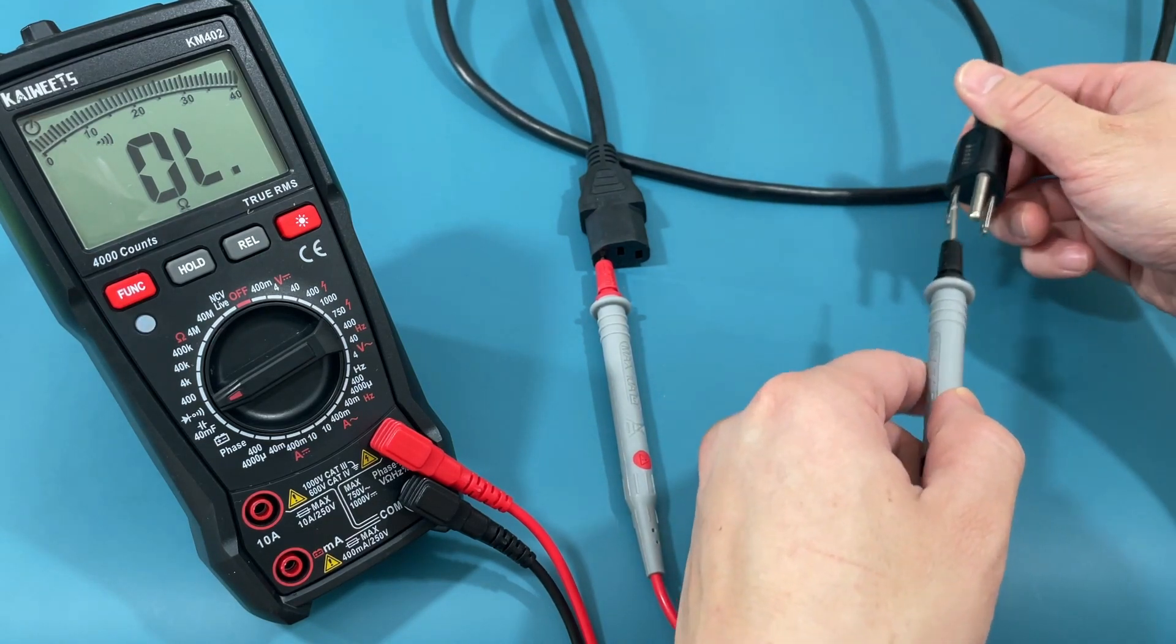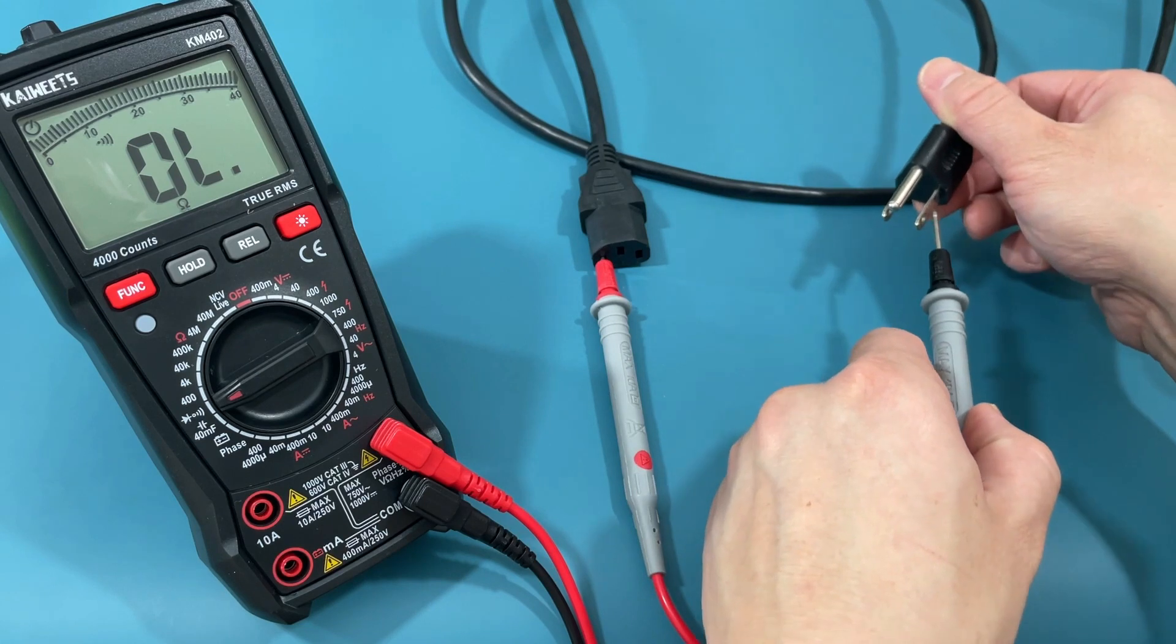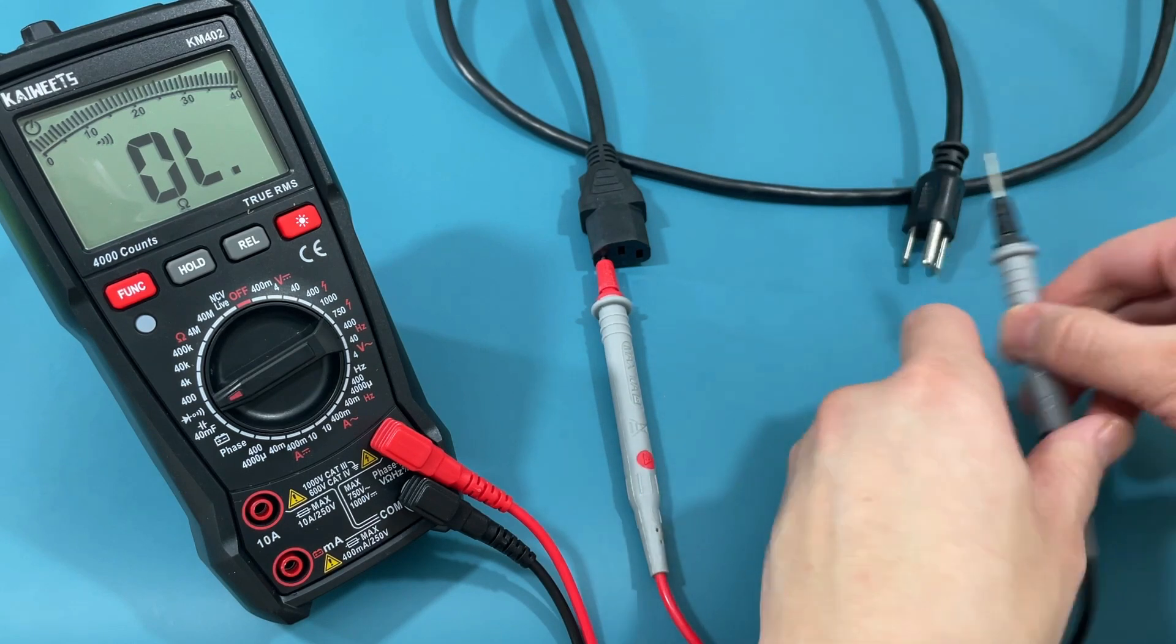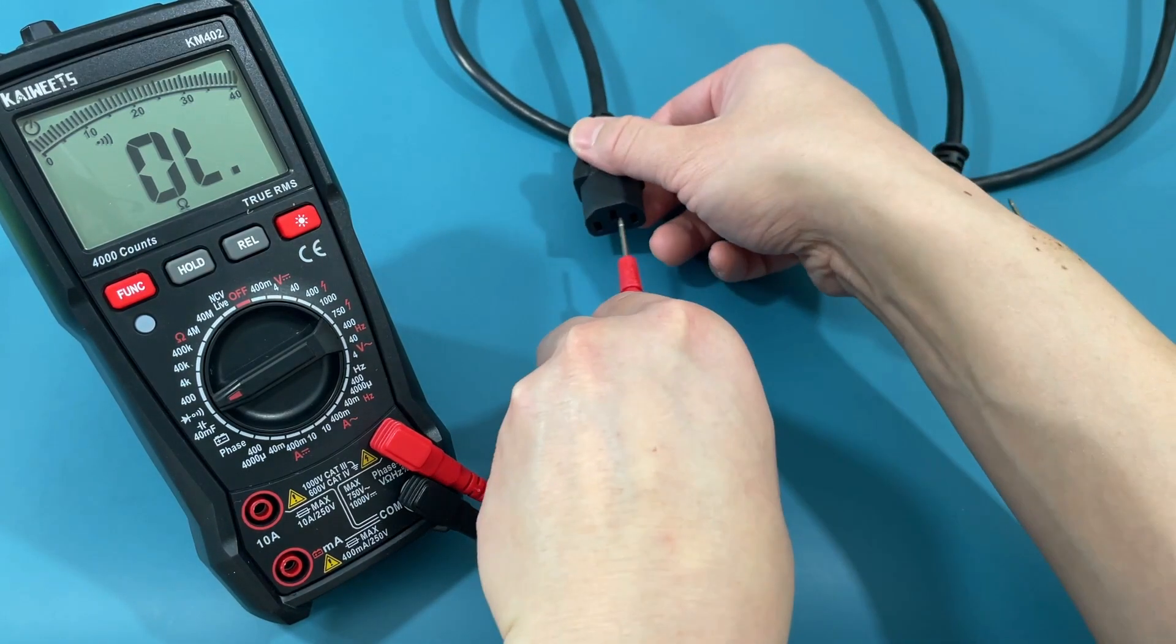You won't hear a beep if you touch the other two wires. The reason is that an extension cord contains three internal wires: one for positive, one for negative, and one for grounding.